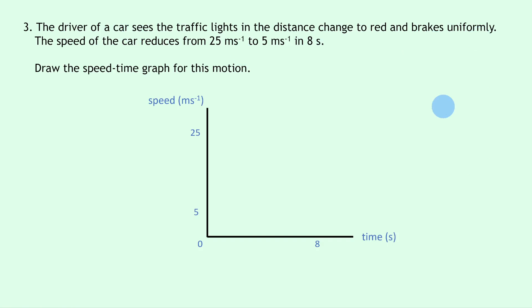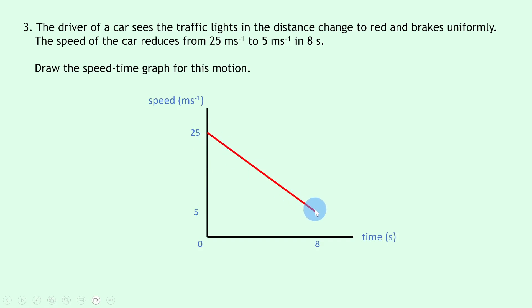To show a negative acceleration or deceleration on the speed-time graph, we use a negatively sloping diagonal line. Because the speed is initially 25 meters per second we start there, and the speed reduces to 5 meters per second in 8 seconds, so we stop the line at that point. Just be careful not to extend the line all the way to the x-axis, because that would represent going down to 0 meters per second, not 5 meters per second, which is the final speed.